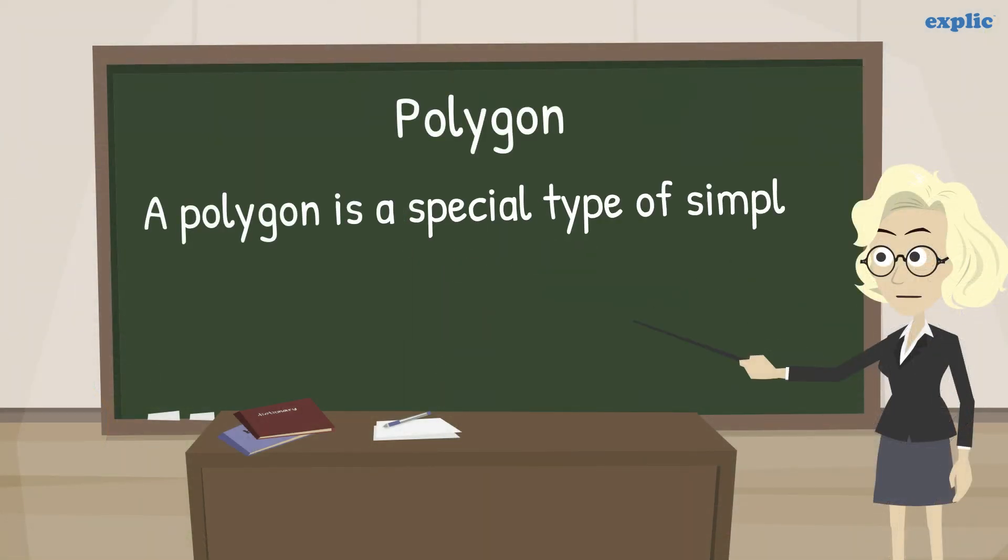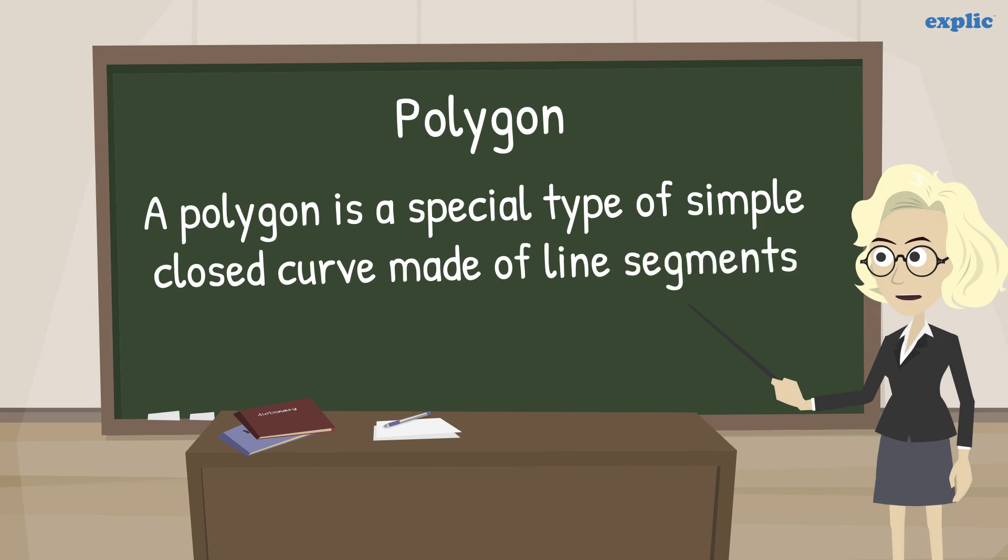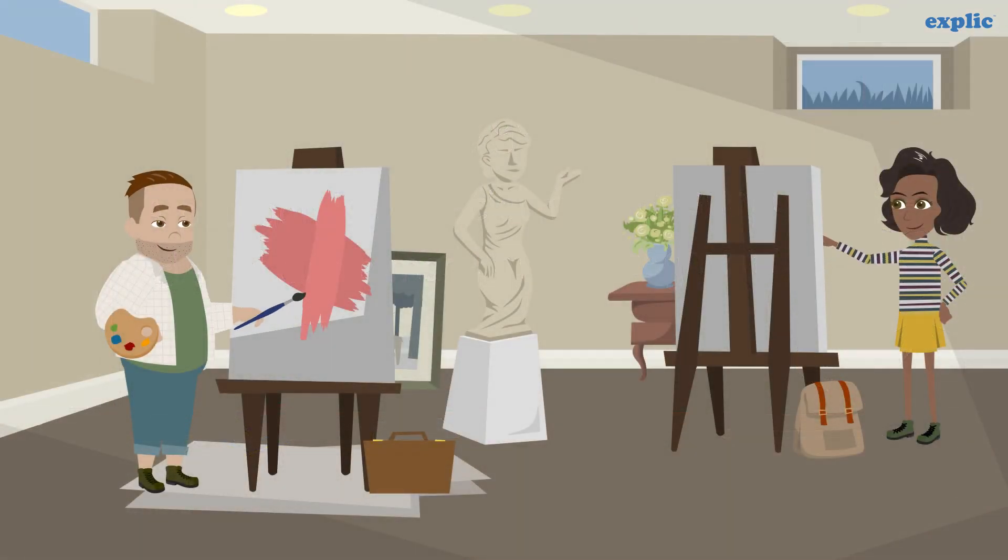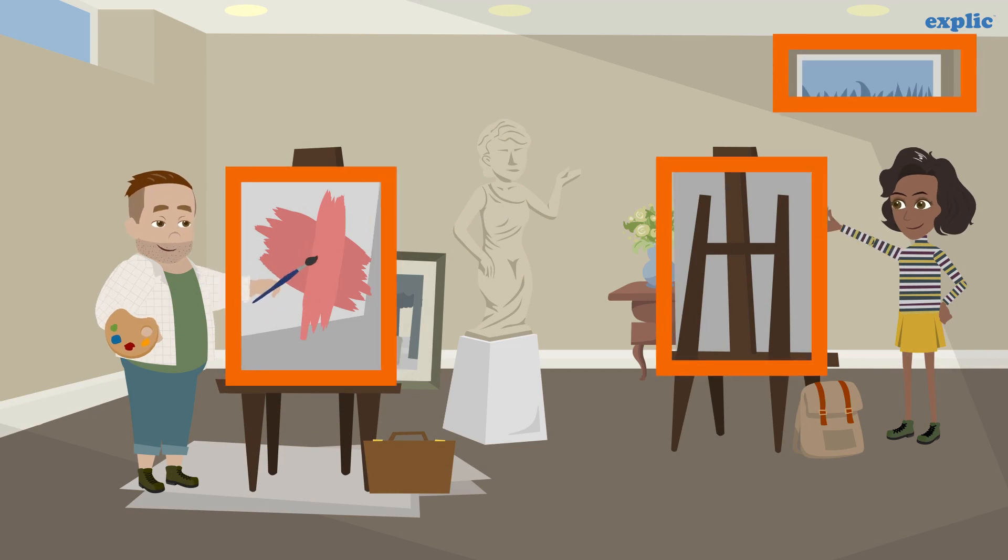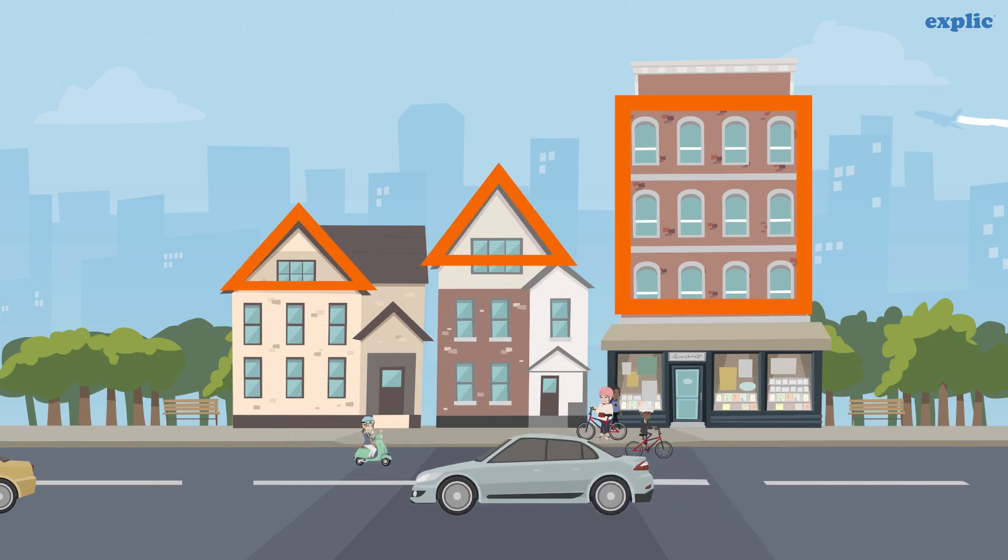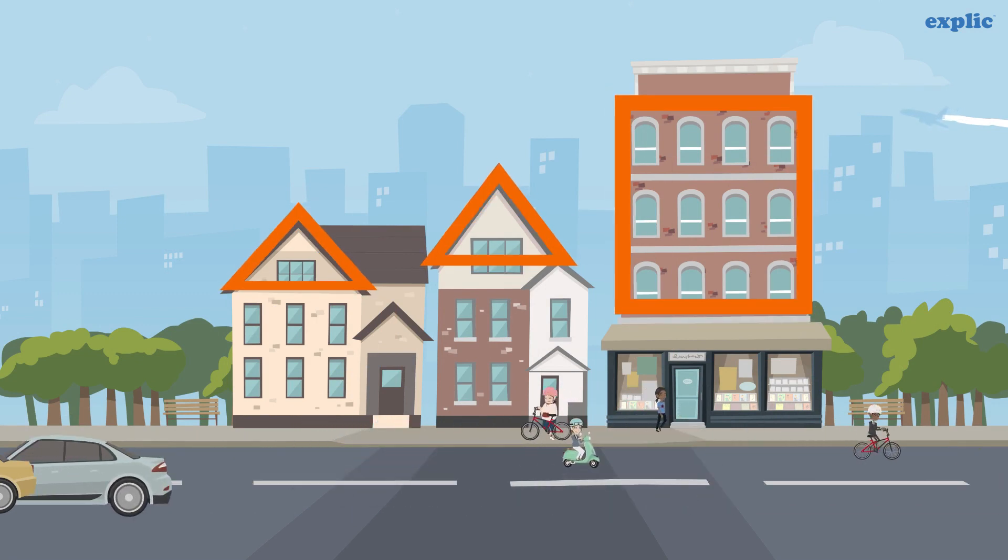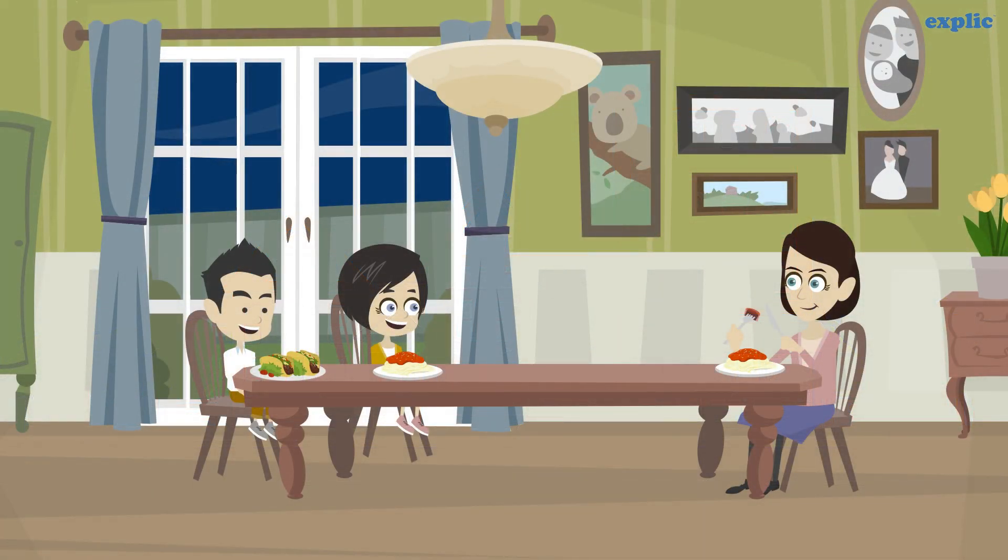A polygon is a special type of simple closed curve made of line segments. We see various polygons around us every day, such as canvas and window, buildings in different shapes, photo frames and window patterns.